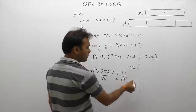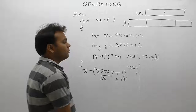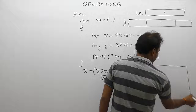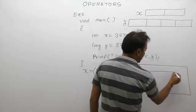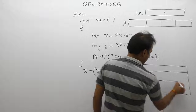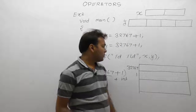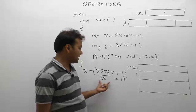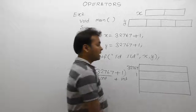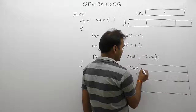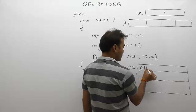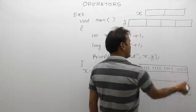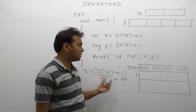Memory can only perform operations in the form of binary bits. So we need the binary number of 3260. Since integer size is two bytes — that is 16 bits — we represent 3260 as a 16-bit binary number. The binary representation of 3260 is: 0 1 1 0 0 1 1 1 1 1 1 1 1 1 1 1.